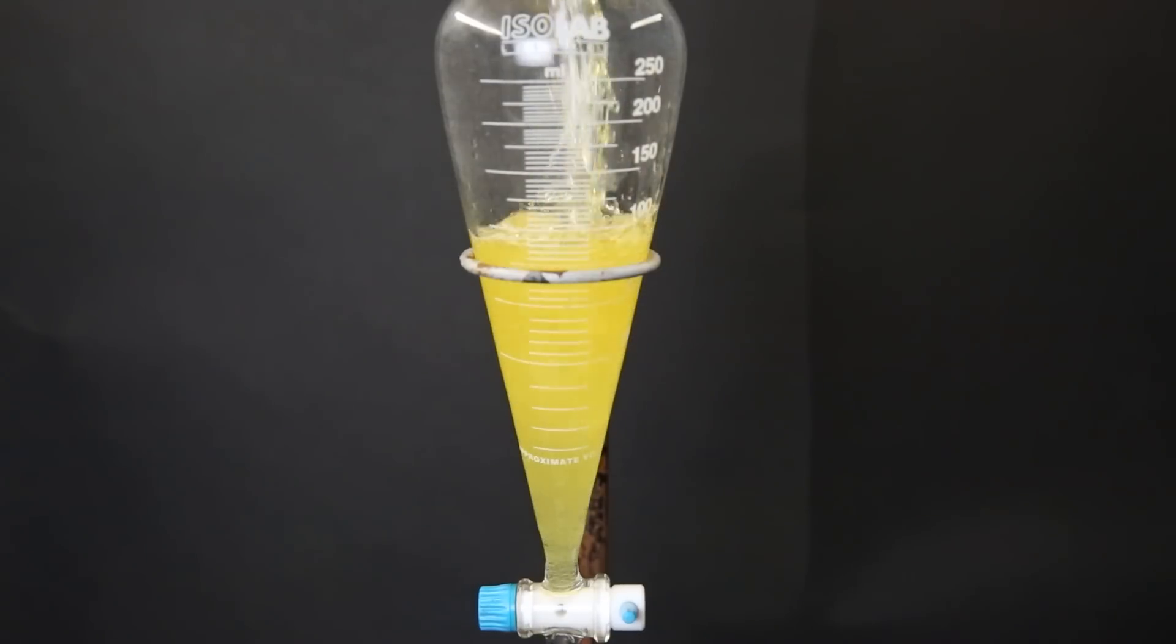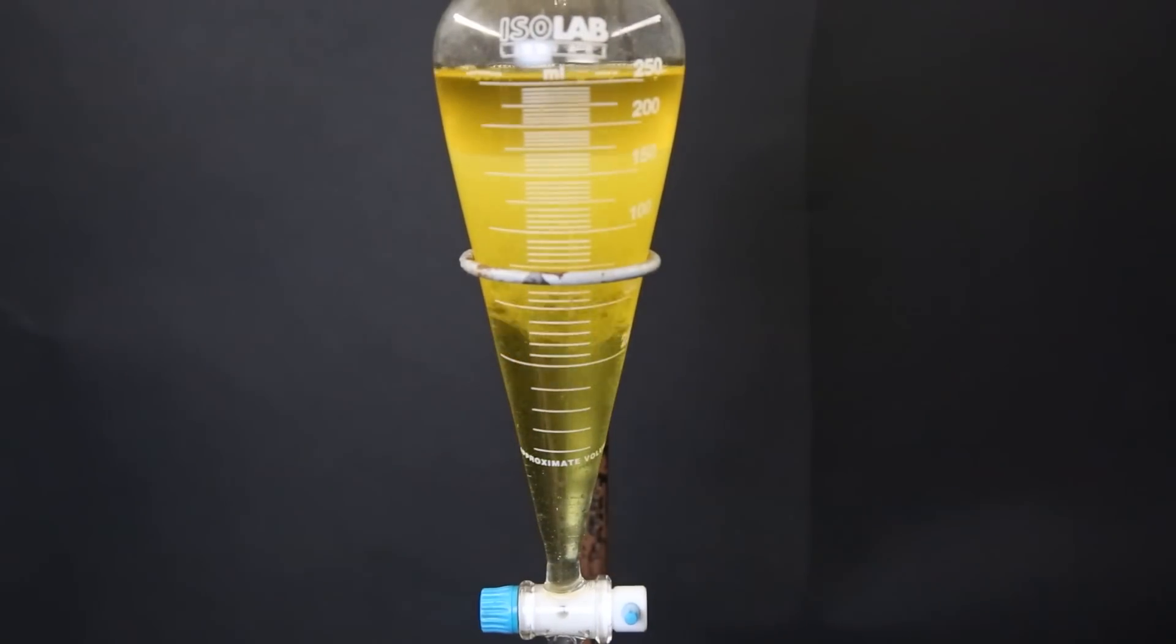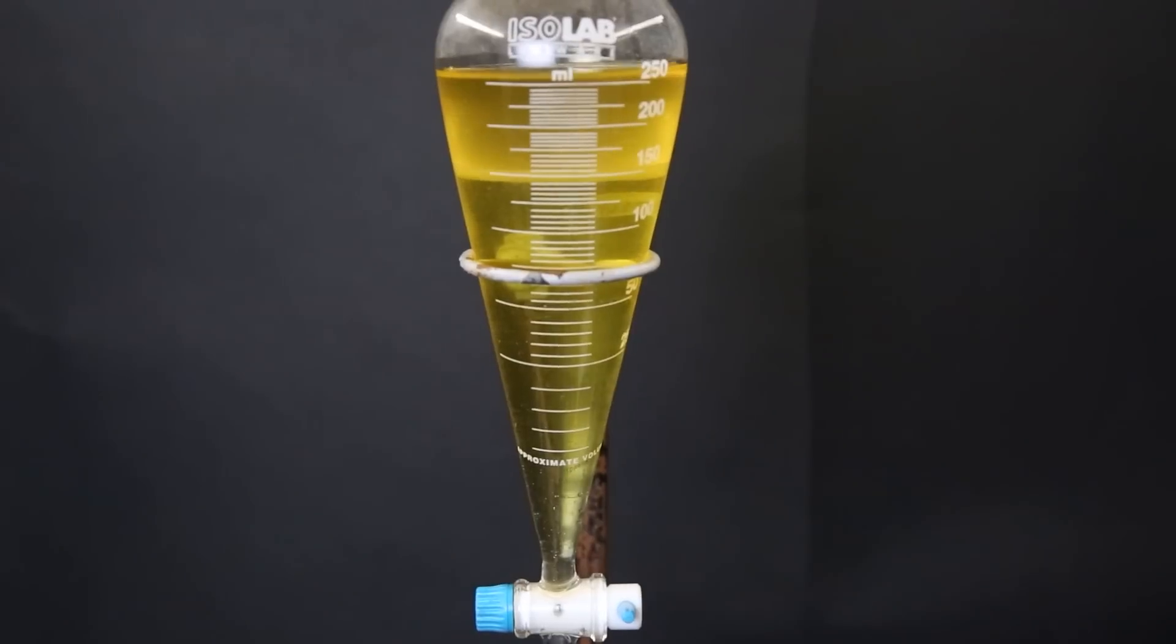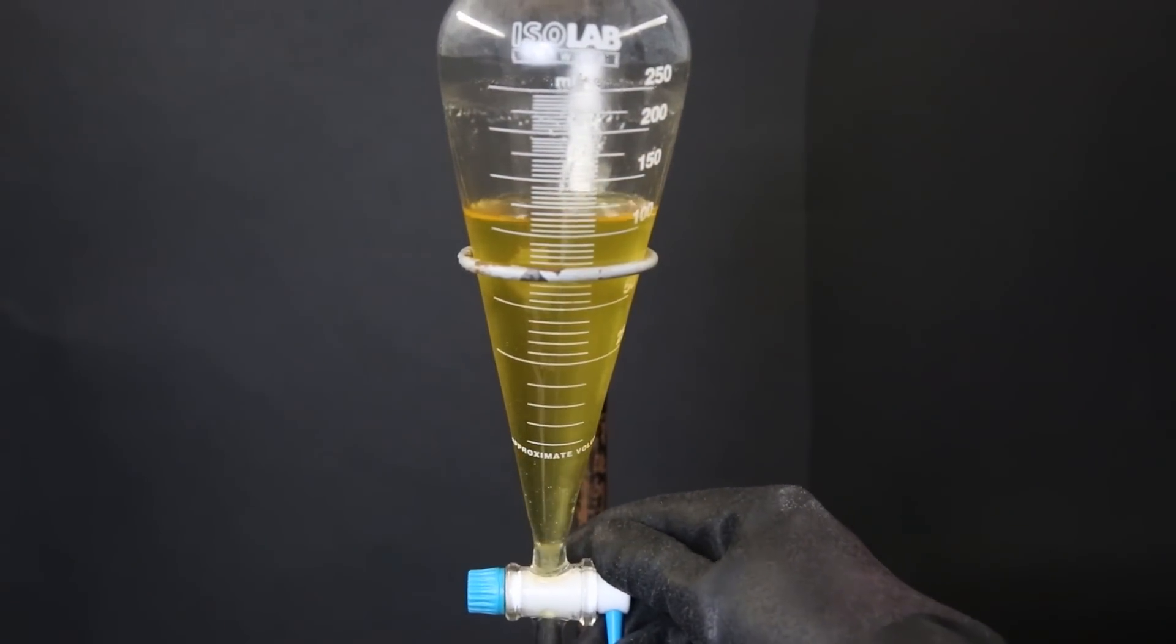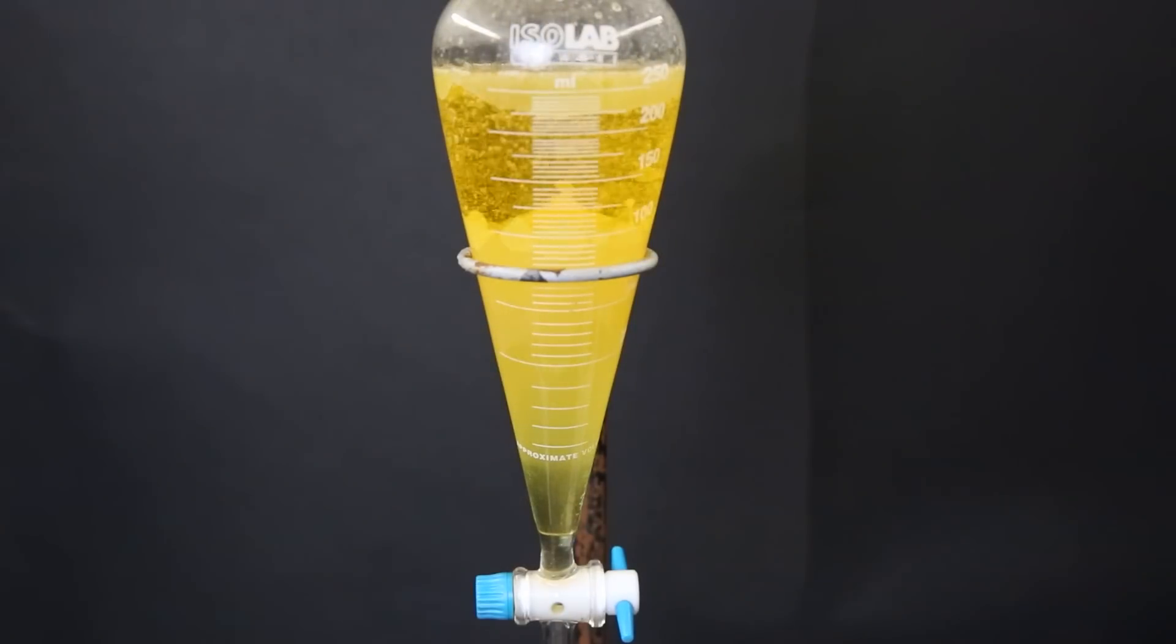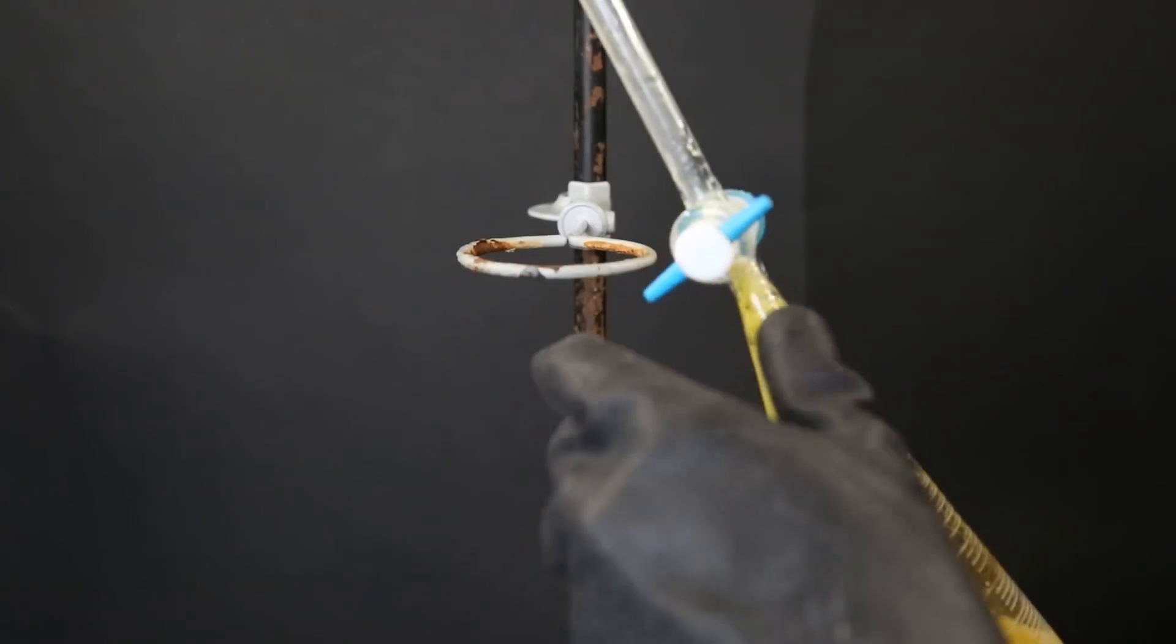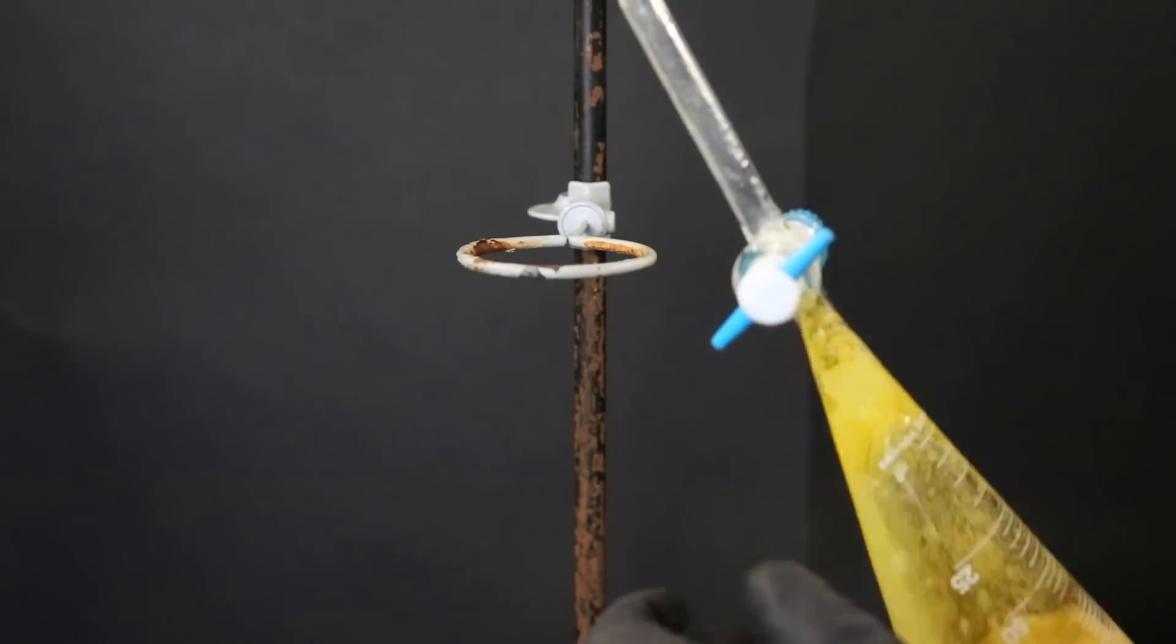I move the mixture to a separatory funnel and allow the layers to separate again. I then drain off the lower acid layer and discard it. Then I wash the remaining organic layer with some saturated sodium bicarbonate solution to destroy any remaining acid. It is probably better to wash it with water beforehand to remove the bulk of the acid, and then wash with the saturated sodium bicarbonate solution to react with anything that is remaining. As you can see a lot of pressure is building up in the funnel. Therefore it is a lot wiser to do a water washing beforehand.